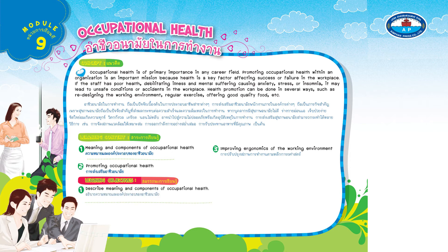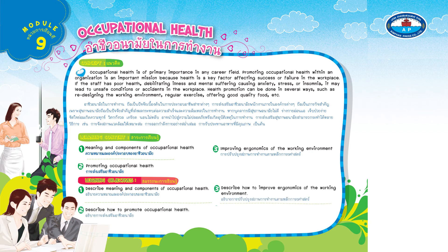Learning objectives: 1. Describe meaning and components of occupational health. 2. Describe how to promote occupational health. 3. Describe how to improve ergonomics of the working environment. 4. Be able to use English for Asian vocation preparedness.